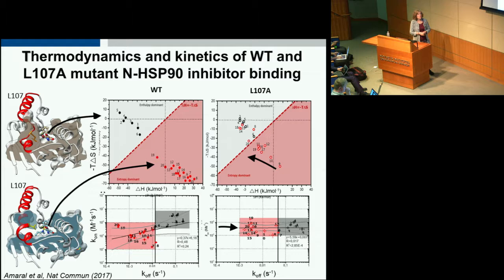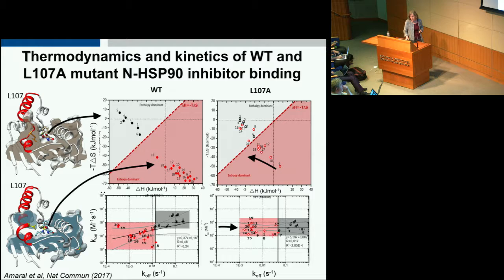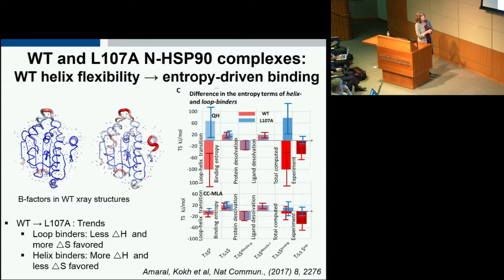Looking at thermodynamics and kinetics: on mutation, the entropically favoured binding to the helical conformation becomes less entropically favoured, shifting more towards entropic binding. The on-rates, on average, become indistinguishable between the two conformations in the mutant, although the difference in off-rates is maintained — the mutant has become more of a conventional protein target. Looking at B-factors in crystal structures, we see more mobility in the helical form, hinting that helix dynamics is important for this entropically driven binding.